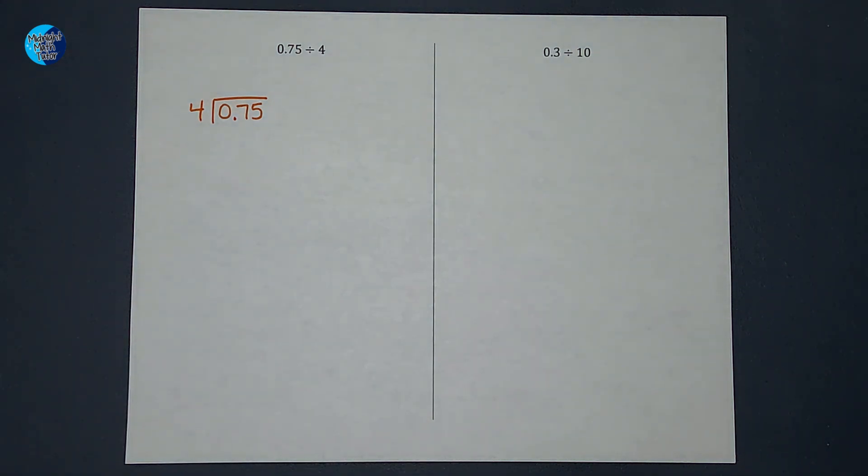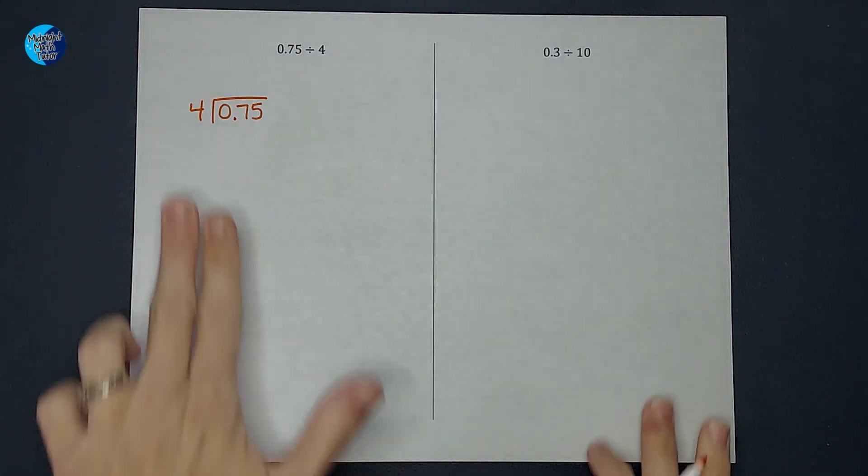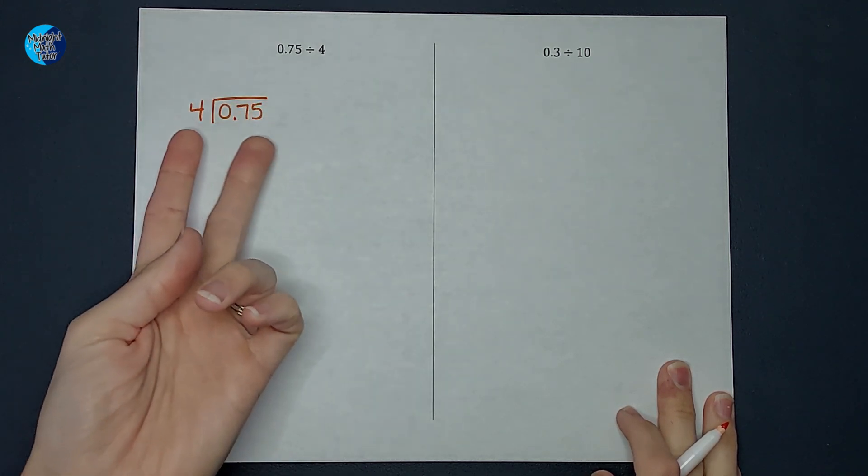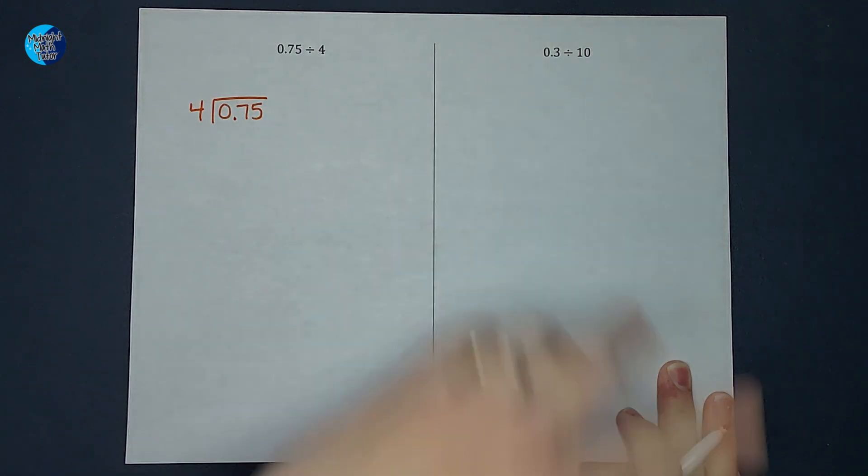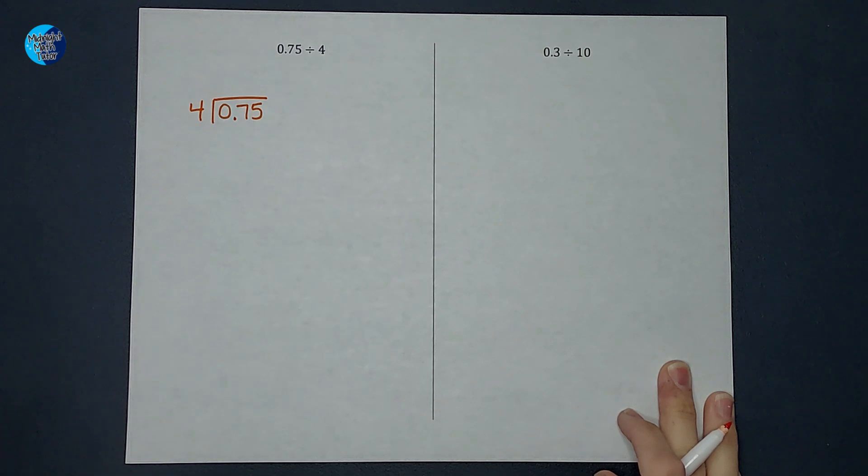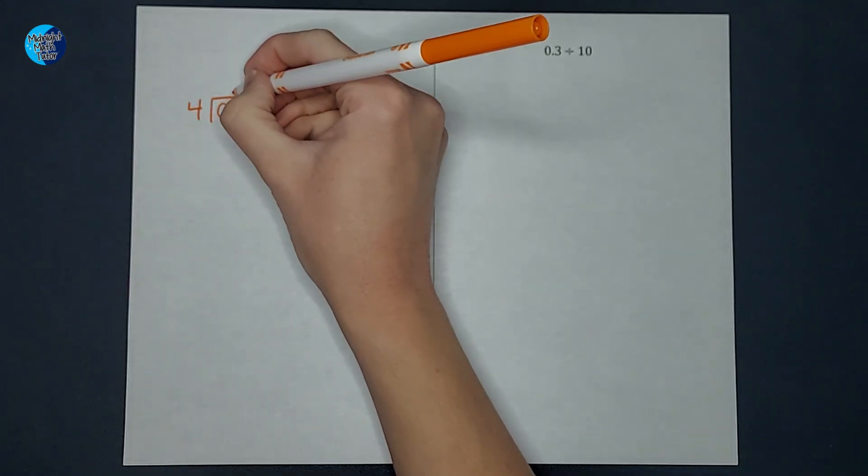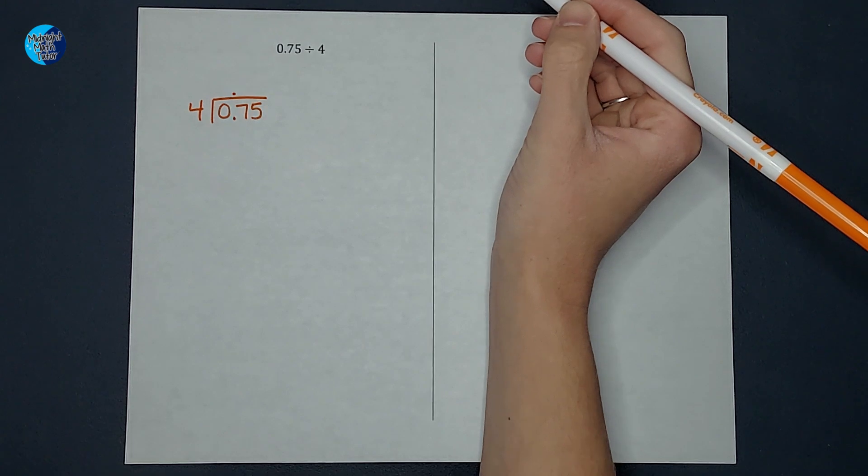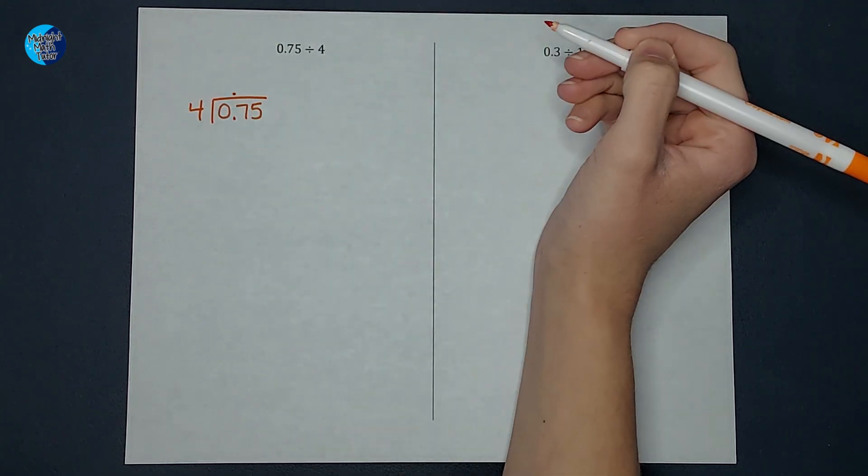Now when we are dividing a whole number into a decimal it's a little bit different than when the decimal is on the outside. I will link a video about how to do that. But with this guy I just got to make sure that my decimal is in the correct place in my answer right above there.